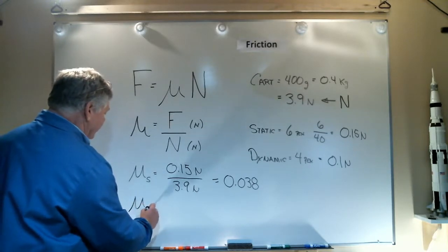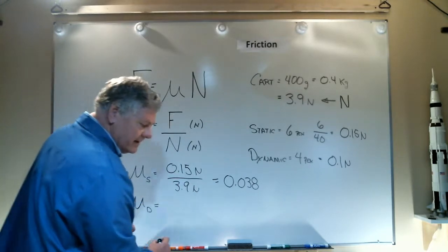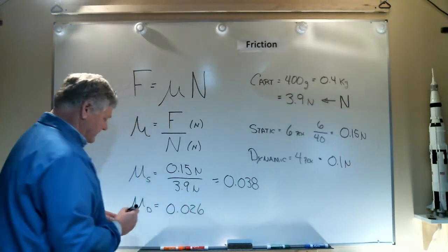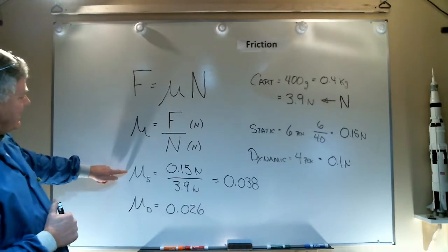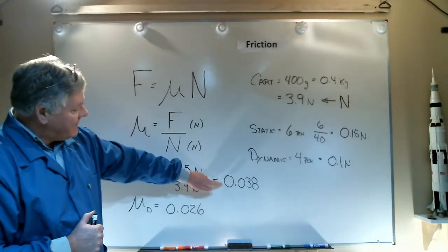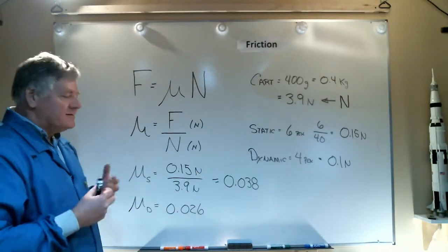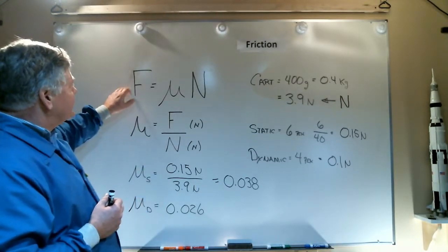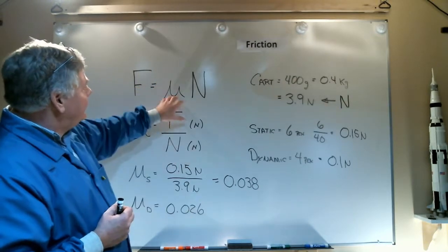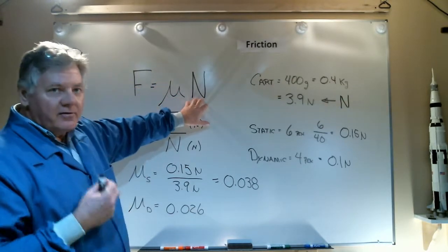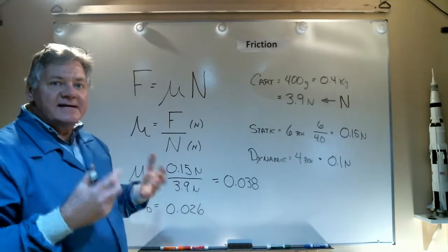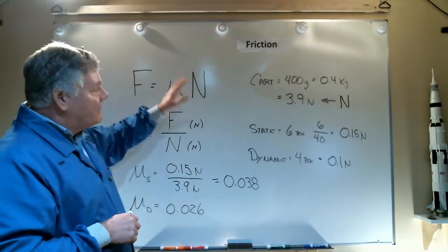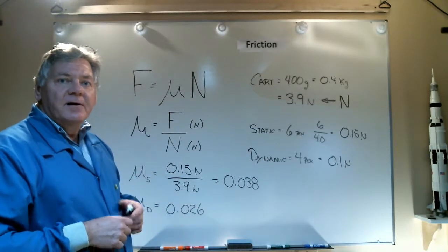I do the same math. I take the force which is 0.1 newtons, dividing it by 3.9 newtons from my normal force, and I get a coefficient of dynamic friction being 0.026. So the static coefficient of friction is greater than the dynamic, and that makes sense. Now depending on whatever weight I have on my cart, I can calculate the frictional force by applying these newly calculated coefficients of friction knowing the weight of my cart. That's how we go through the process of determining the coefficient of friction for objects.